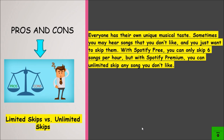Now, limited skips versus unlimited skips. Everyone has their own unique musical taste. Sometimes you may hear songs that you don't like and you just want to skip them. With Spotify free, you can only skip six songs per hour. But with Spotify premium, you can skip any song you don't like unlimited times.